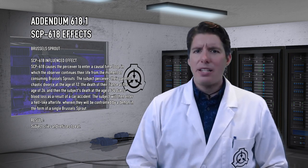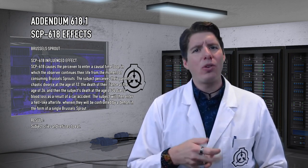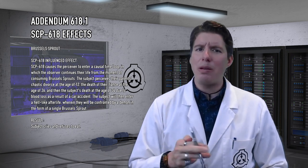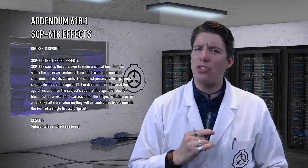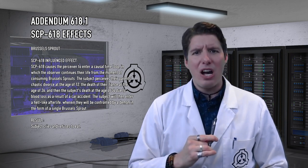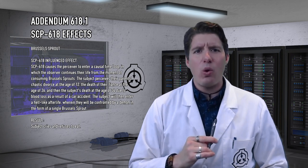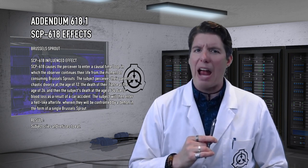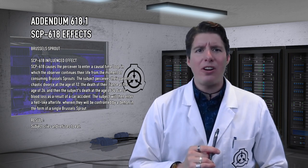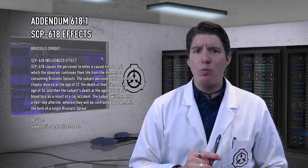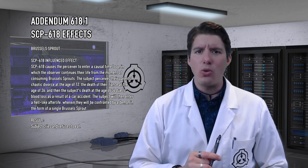Brussels sprouts. SCP-618 causes the perceiver to enter a causal time loop, in which the observer continues their life from the moment of consuming Brussels sprouts. The subject perceives their parents' chaotic divorce at the age of 12, the death of their fiancé at the age of 26, and then the subject's death at the age of 34 due to blood loss as a result of a car accident. The subject will then enter a hell-like afterlife, wherein they will be confronted by a demon in the form of a single Brussels sprout. Subject cries and refuses to eat.